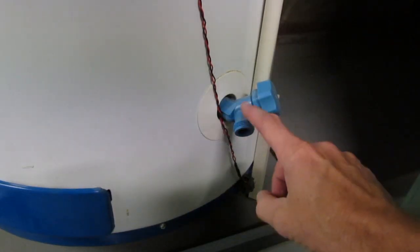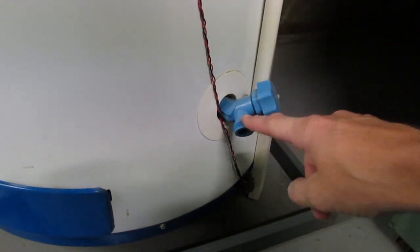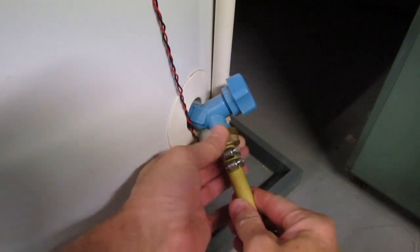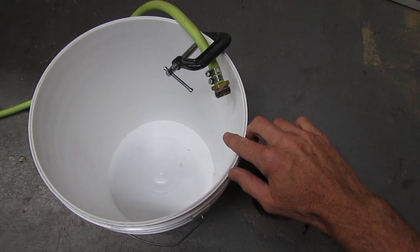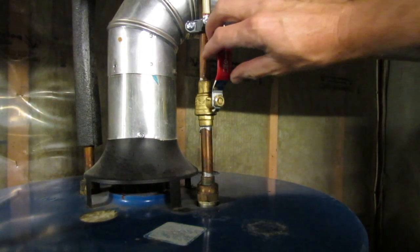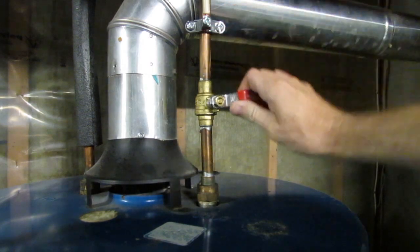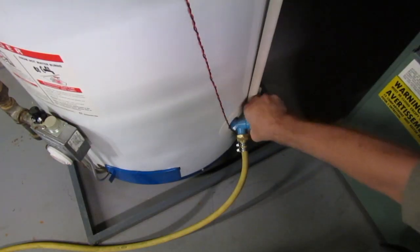Now get your garden hose and connect it to the drain at the bottom of the water heater. So what I've done is I've taken the garden hose and put it into a nice clean white bucket so we can see how much sediment and junk is actually in that water heater. Now you want to turn off the cold water that enters the water heater. And now fully open the valve at the bottom of the tank.